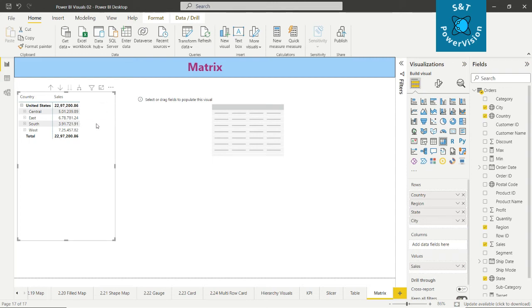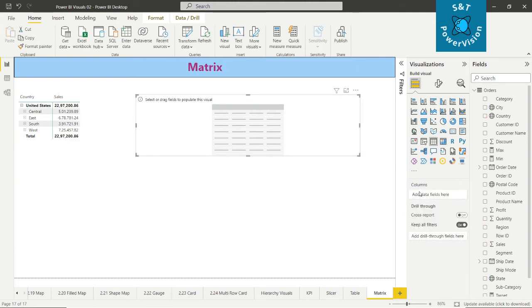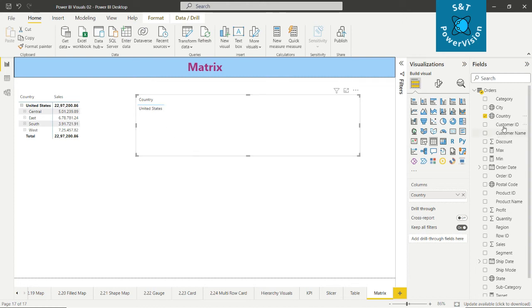Just see here that in the matrix we have rows, columns, and values. But if you talk about table, we have only columns. Now we move to the columns: countries. See the changes here. Now region, states, city.